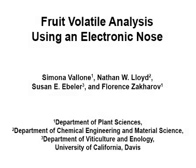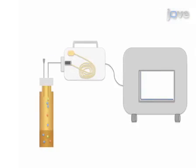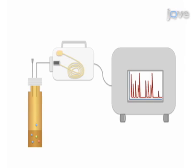The overall goal of this procedure is to perform a rapid analysis of volatile compounds in fruits. This is accomplished by first cutting and homogenizing the fruit tissue. The vapor phase above the liquid sample is then analyzed with the electronic nose.